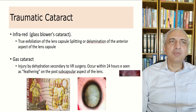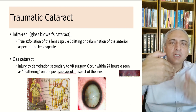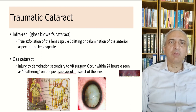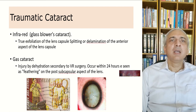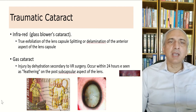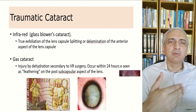Infrared or glass blower's cataract involves true exfoliation — splitting or delamination of the anterior aspect of the lens capsule. Gas cataracts can occur as an injury by dehydration secondary to vitreoretinal surgery, appearing within 24 hours as feathering on the posterior subcapsular aspect of the lens. Gases such as sulfur hexafluoride (SF6) or C3F8, used as internal tamponade after retinal detachment surgery, tend to produce a temporary cataract that resolves when the gas is absorbed.